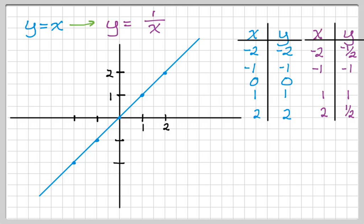Let's plot some points. I've plotted all four of those points. I'm actually going to add two more: negative 1 half, negative 2, and 1 half, 2. The reciprocal of negative 1 half is negative 2, and the reciprocal of 1 half is 2. I've added those points just to give it a little more shape.